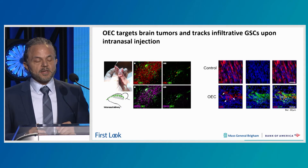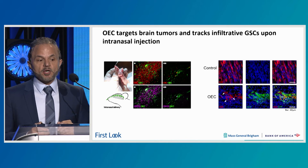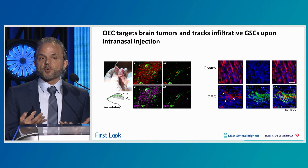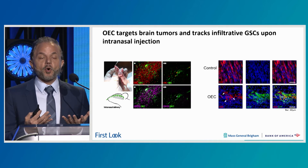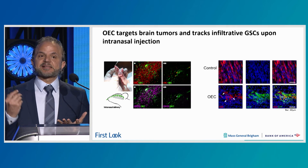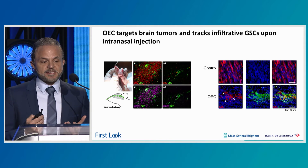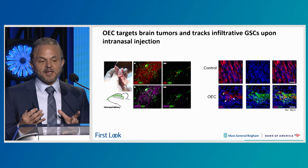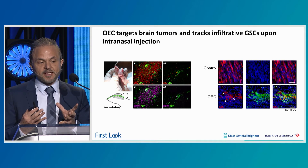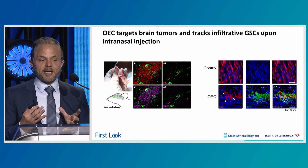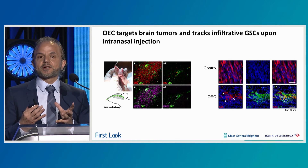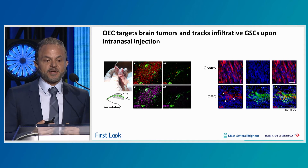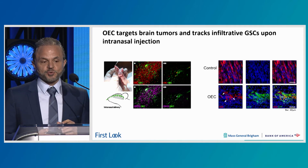When you zoom in more deeply in this model, you see that in the control setting the tumor becomes part of the brain. But in the setting where OECs are injected — and I should say this is a single intranasal injection of OECs — you see that the OECs are actually ensheathing these glioma stem cells. You can see that these cells in red become rounded in shape, and we actually have data showing that these OECs are also phagocytosing glioma stem cells. You can see the OECs in green homing very well to the primary tumor site.